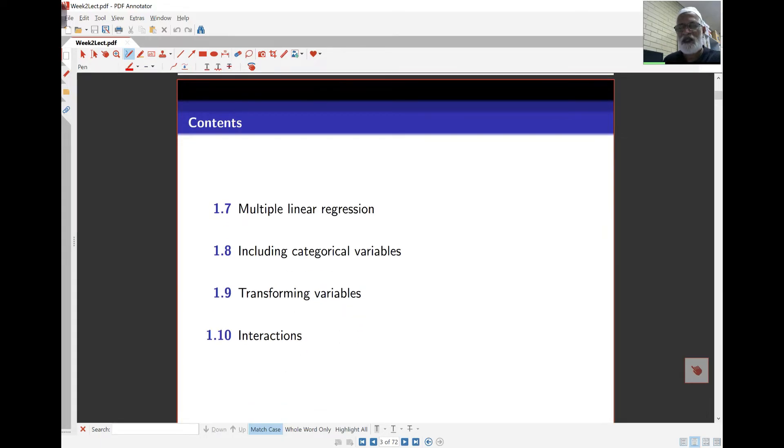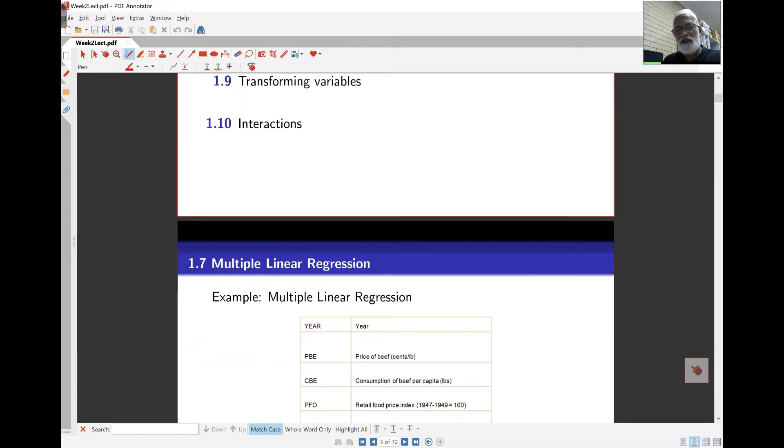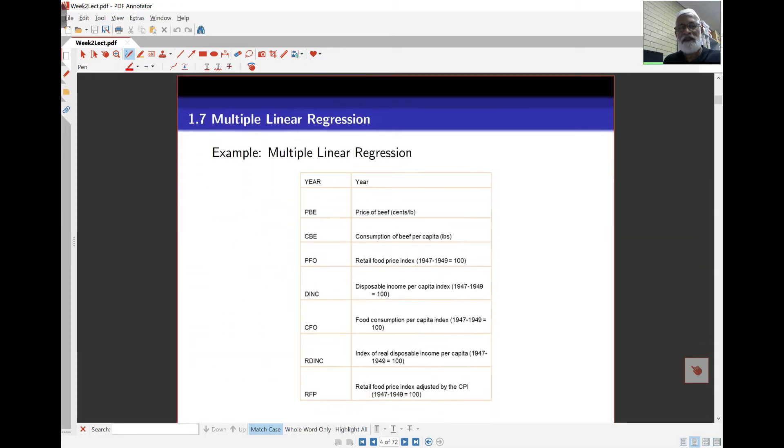We looked last week at simple linear regression which means there was only one explanatory X variable. Then we'll extend the linear model to also include categorical variables. We'll then learn about transforming variables and why we should transform and finally we'll look at interactions. In the face-to-face lecture session we'll take a look at more examples and also extend some of the work here.